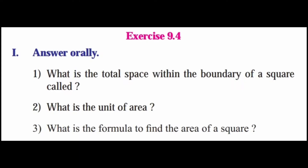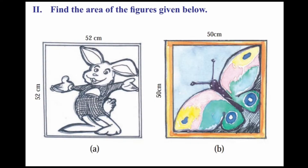Let us see exercise 9.4, answer orally. First question: What is the total space within the boundary of a square called? It is called area of the square. What is the unit of area? The unit of area is square meter or square centimeter. What is the formula to find the area of a square? Area of a square is equal to length into length square units.